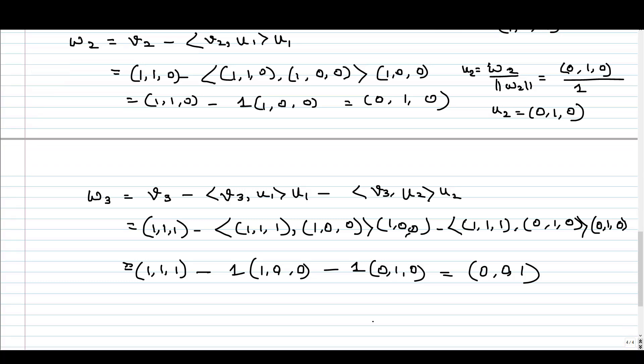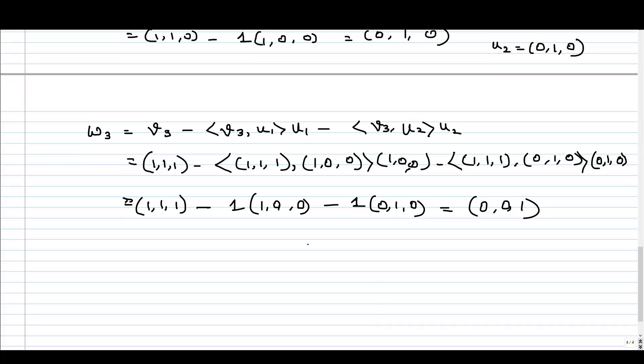And now we have to normalize it. After normalizing, we will get the new vector U3, which is W3 by norm of W3. Norm of W3 is 1, so we will get (0, 0, 1) by 1, and that is nothing but (0, 0, 1).